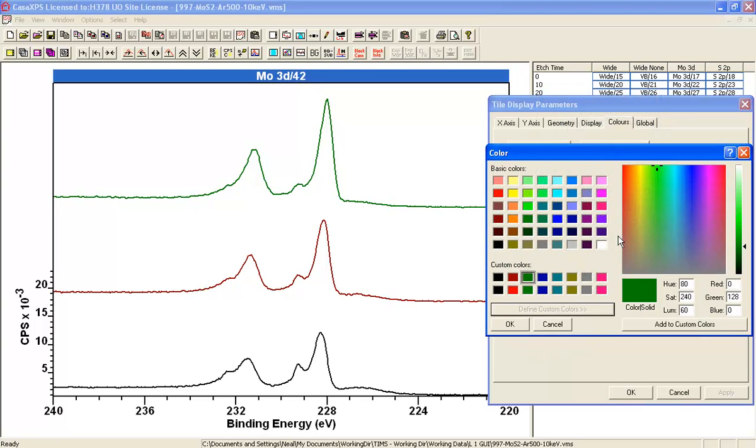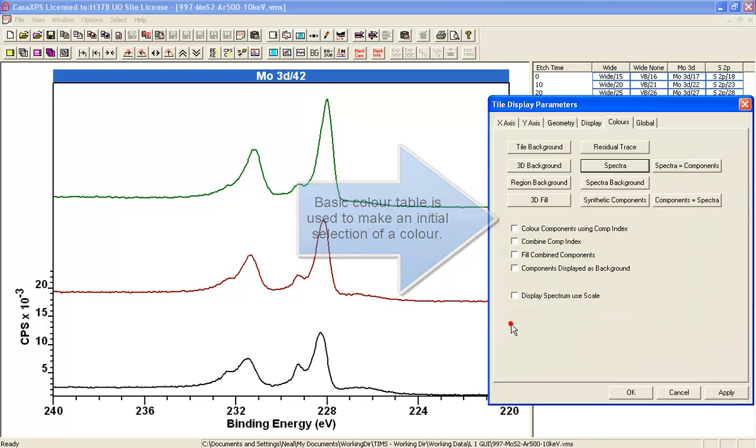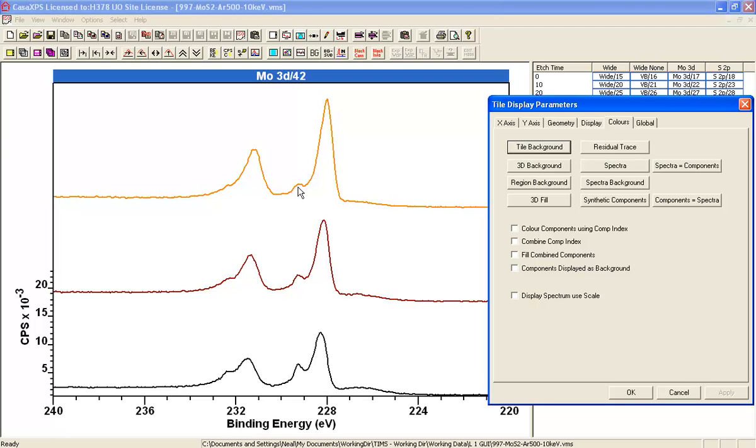If I select it and decide to make it a different color, say orange, then I update the parameter on the dialog window and update the display. Now the green color has turned to orange.